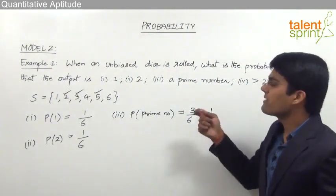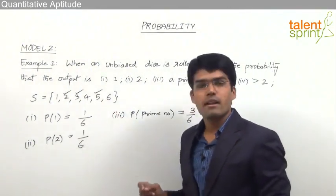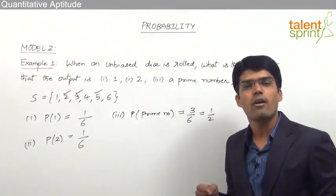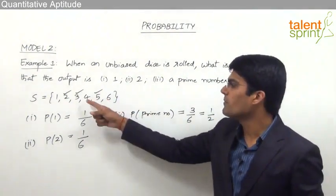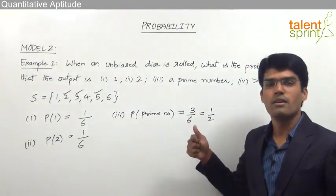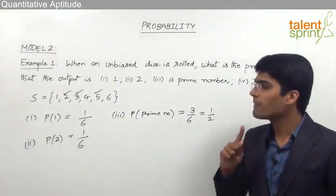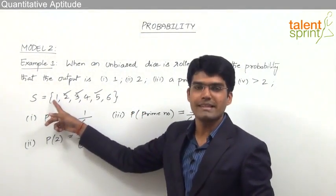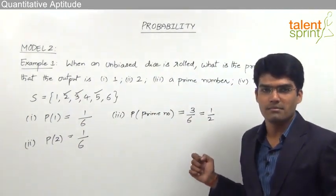Likewise, what is the probability of getting a composite number? Out of the sample space, there are only 2 composite numbers: 4 and 6. So the probability is 2/6, which equals 1/3. Be careful — 1 is not a composite number; 1 is neither prime nor composite, so don't include 1 in the category of composite numbers.